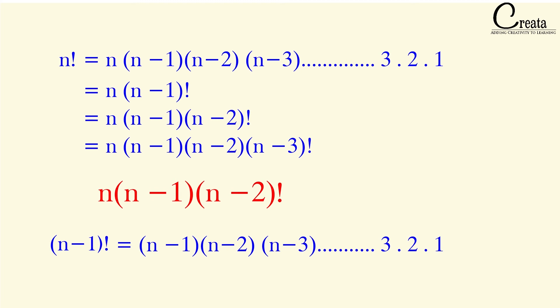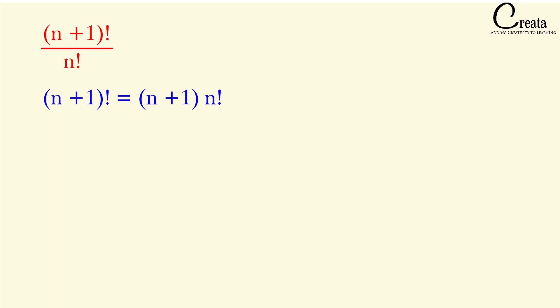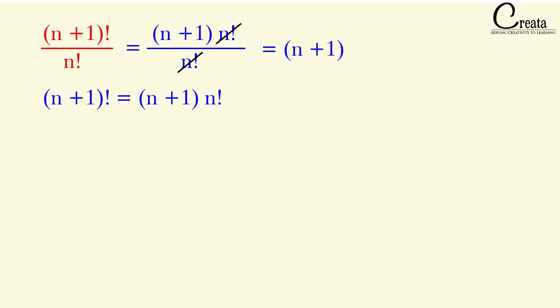Just stick with the basic fundamental — the rolling technique. Let's take a simple question: what will be the value of (n+1) factorial upon n factorial? Can we rewrite (n+1) factorial as (n+1) into n factorial? The next lower number of n+1 is (n+1) minus 1, which is n. So n factorial and n factorial cancel out, and we get n+1. That is the answer.